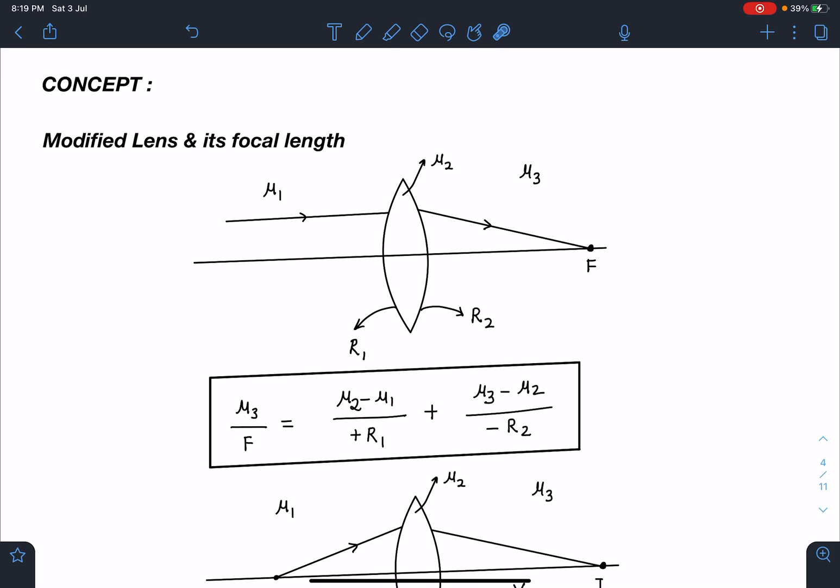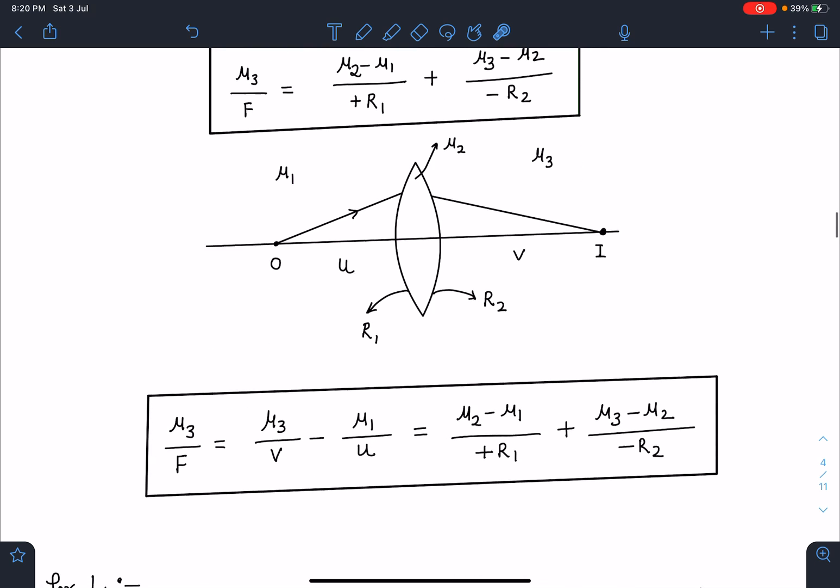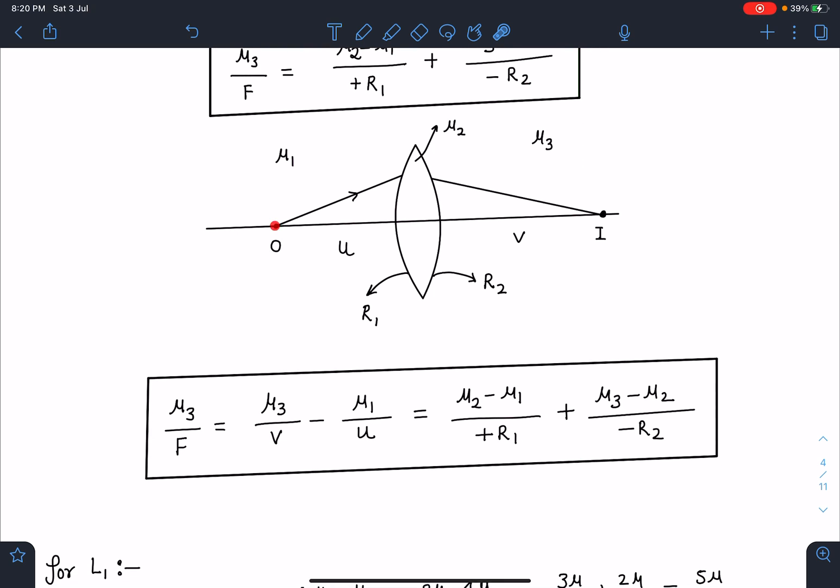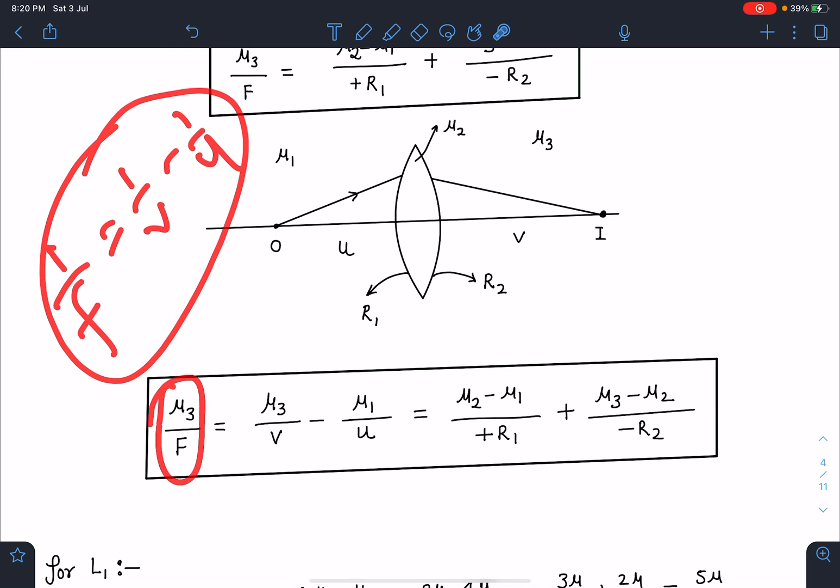Similarly, the modified lens equation: if object is at distance u and image is at distance v, and the image is placed in medium μ₃, object is placed in medium μ₁, and lens material has refractive index μ₂, I can write the modified lens equation: μ₃/f = μ₃/v - μ₁/u.